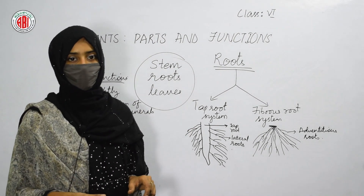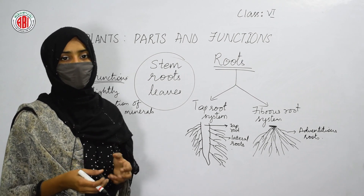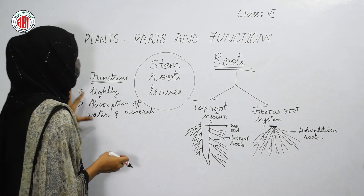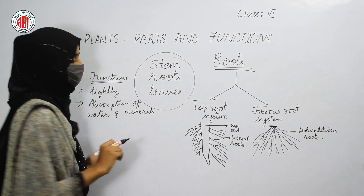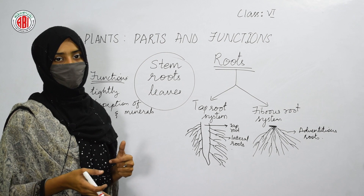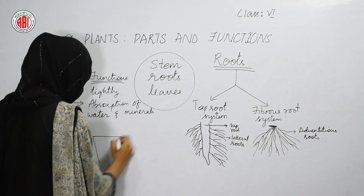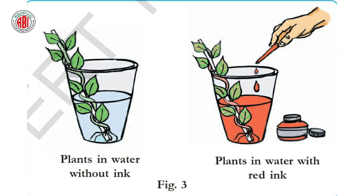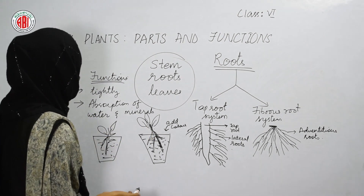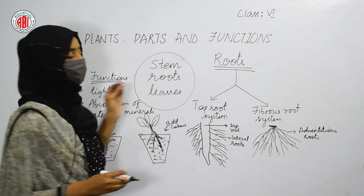When we pour water into the soil, the water and minerals present in the soil get absorbed by the roots. Let us do one activity to understand how roots help in absorption. We take two tumblers, pour water in both, and add color to one. Place some roots of a plant in both tumblers. After a few hours, we can observe that the roots absorb the colored water, confirming that absorption is carried out by roots.